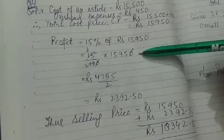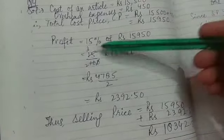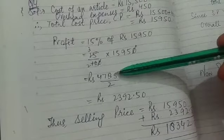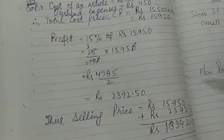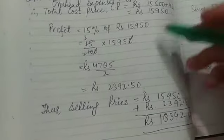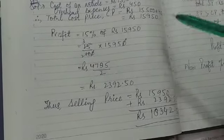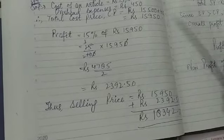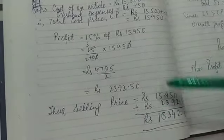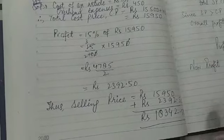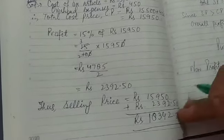Calculating 15% of ₹15,950: the zeros cancel and we get ₹4785 ÷ 2 = ₹2392.50. So the profit is ₹2392.50. Now, selling price = CP + profit, so selling price = ₹15,950 + ₹2392.50 = ₹18,342.50.